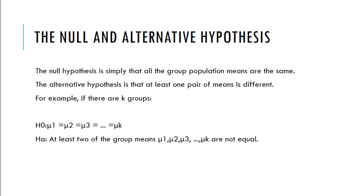So the alternative, at least two of the groups means, mean one, two, or three, or whatever mean are not equal. That's all it's saying. So null is all your means are equal. Your alternative is at least one mean is different.